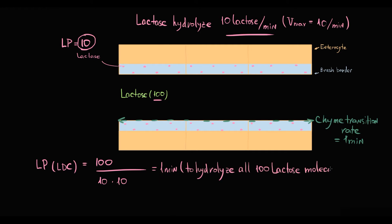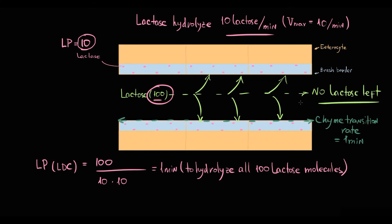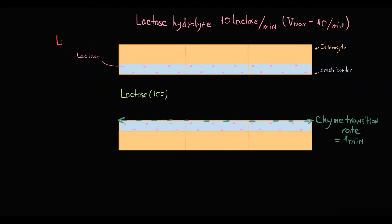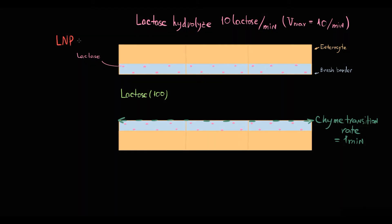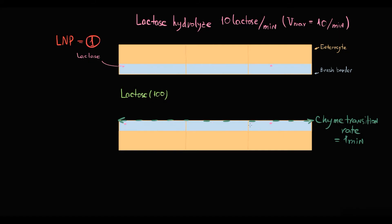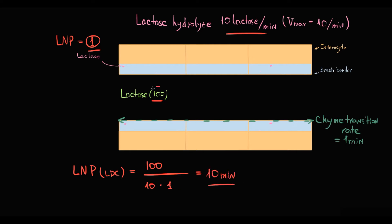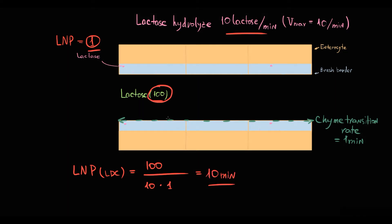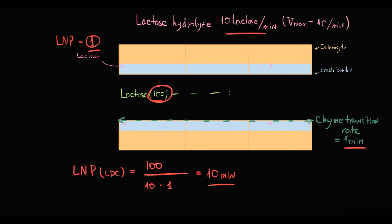Thereby, within 1 minute of transit time, all lactose molecules will be degraded and absorbed. But in the case of lactase non-persistence, the number of lactase molecules is not 10 but 1. So it will take 10 minutes to degrade the same amount of lactose. If transit time is 1 minute, only 10 out of 100 lactose molecules will be degraded, and 90 lactose molecules will pass through the small intestine intact.